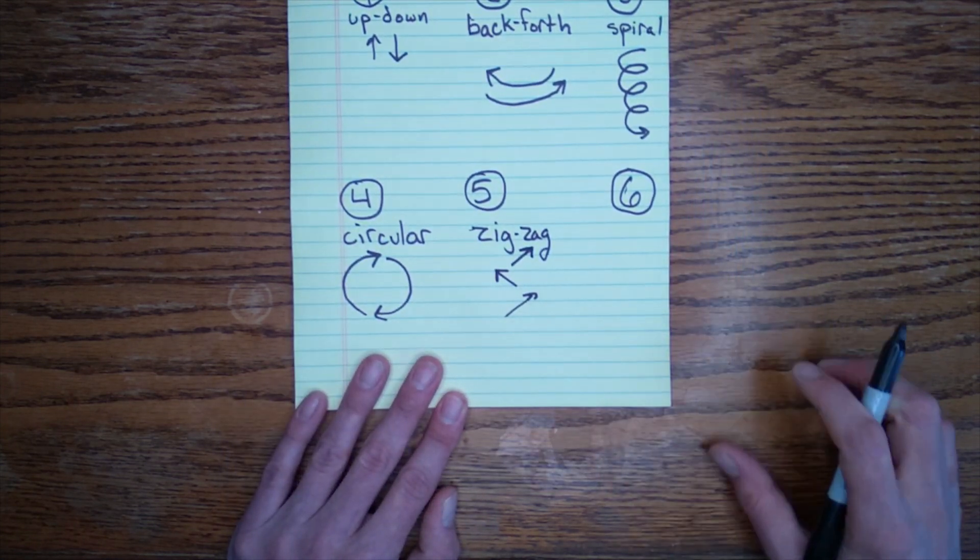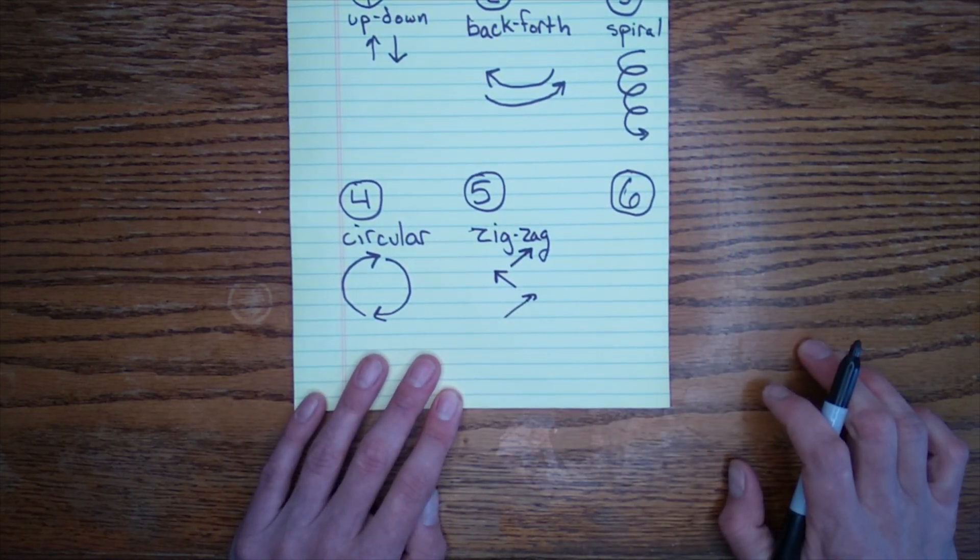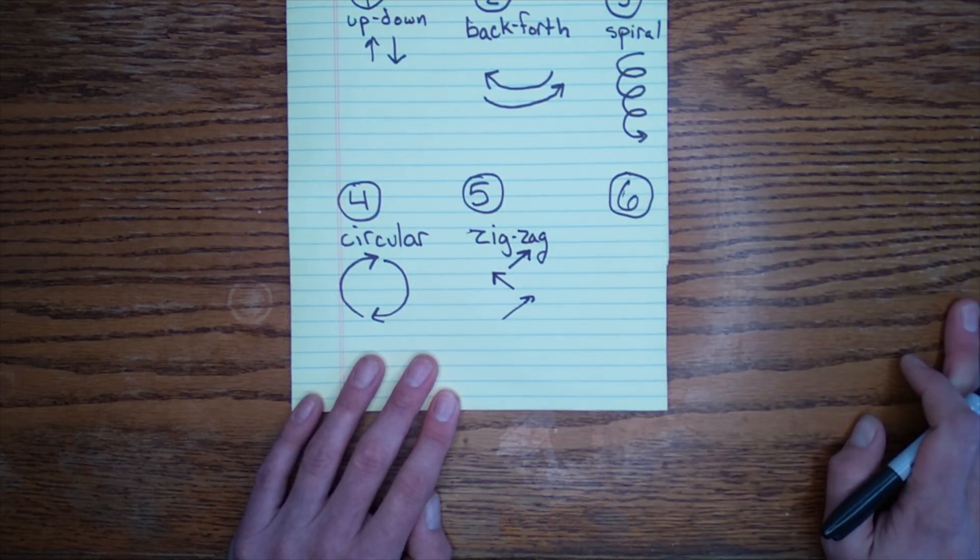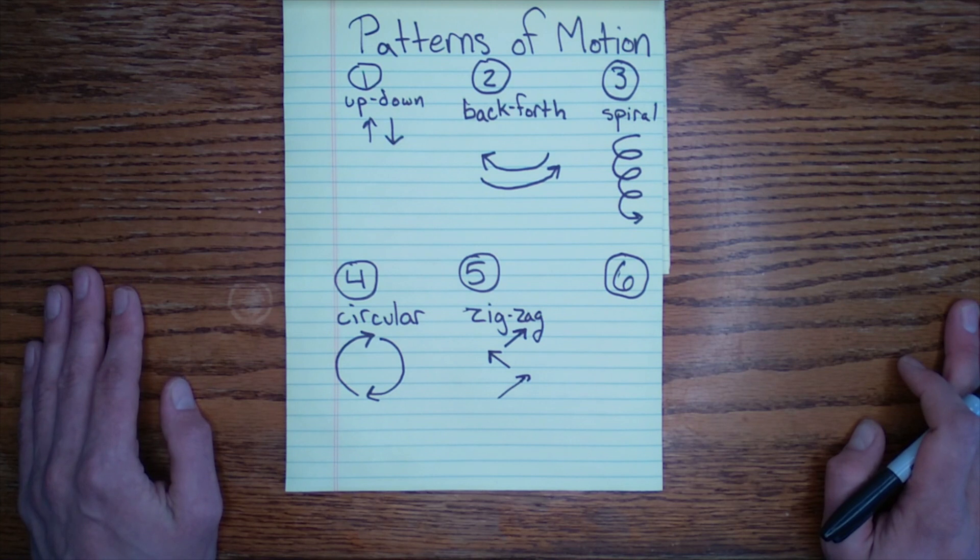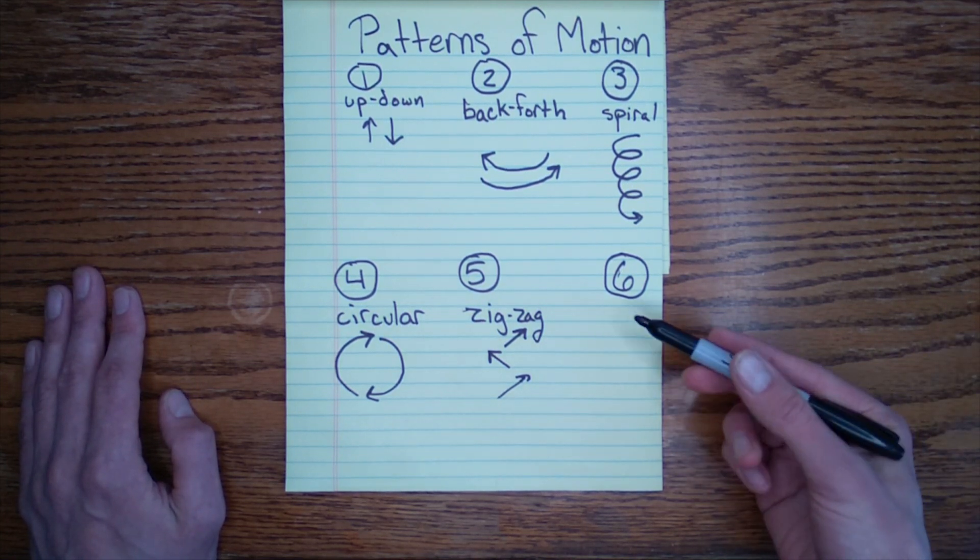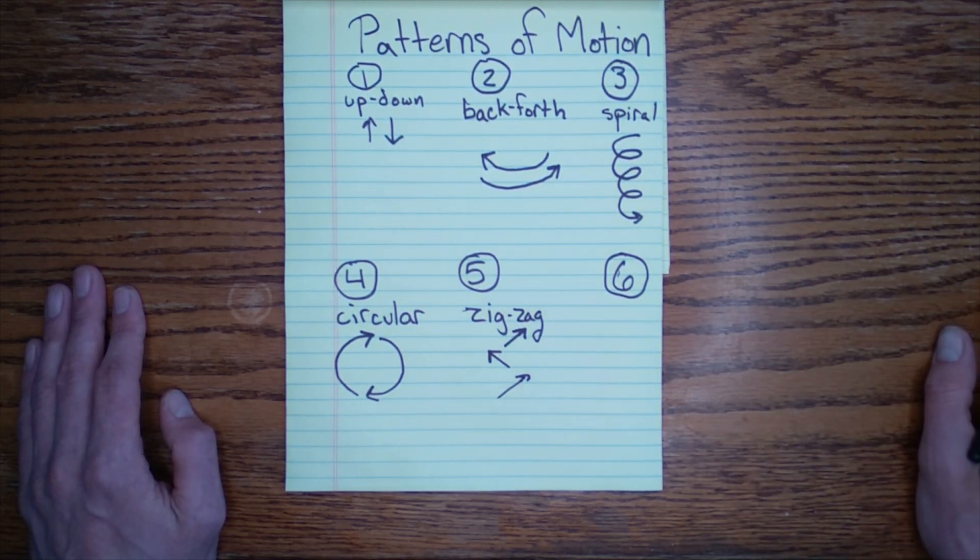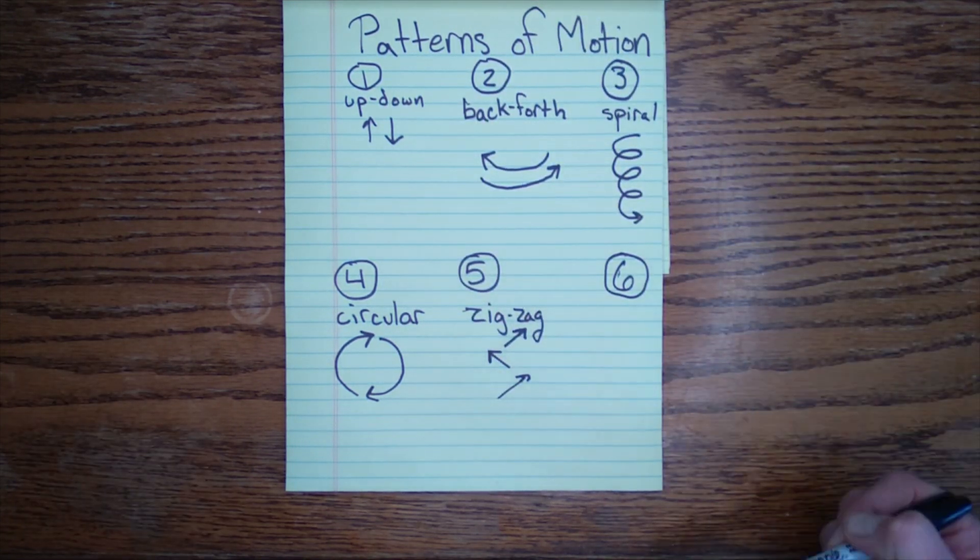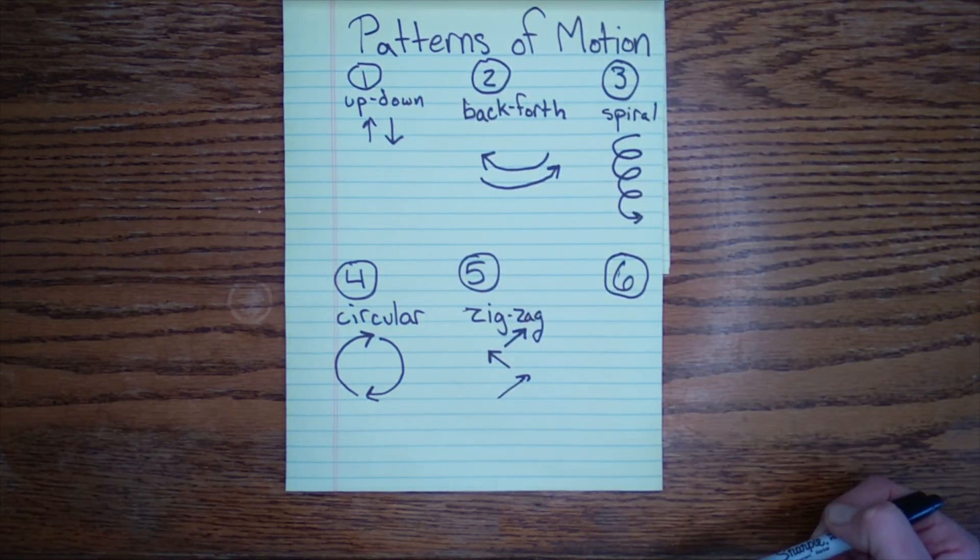Now number six. This is where we say, now it's your turn. You are going to complete your diagram by thinking of a sixth pattern in motion. When you complete your diagram, regardless, share it with a loved one.